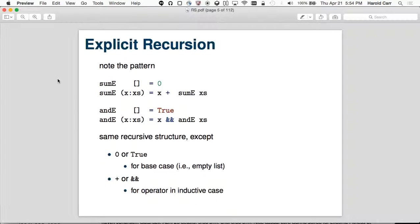And the and-e, which in the e means explicit, you give it a list of booleans and it returns true or false, depending if they're all true. And it's the exact same thing. If you look at it, the only thing that's different is, in the base case, where it's nil, it's either a zero or true. And then the operator that you're using is either plus or the boolean and. Other than that, it's the same thing.